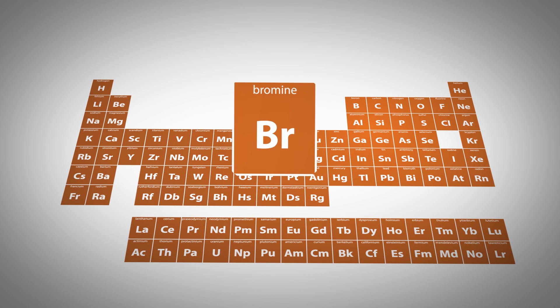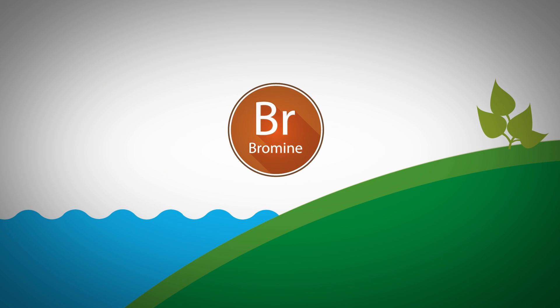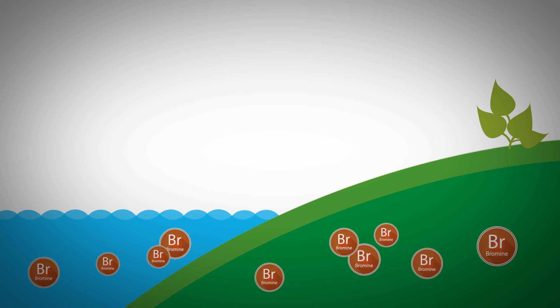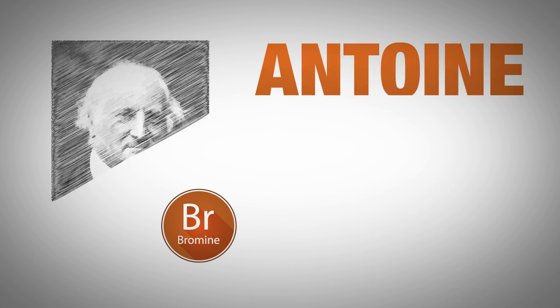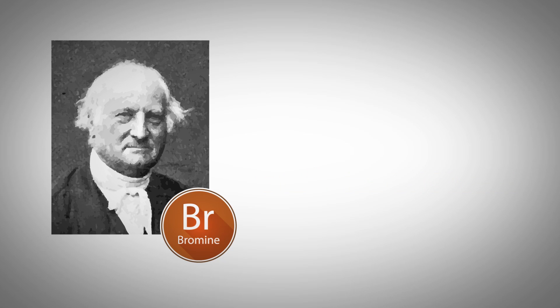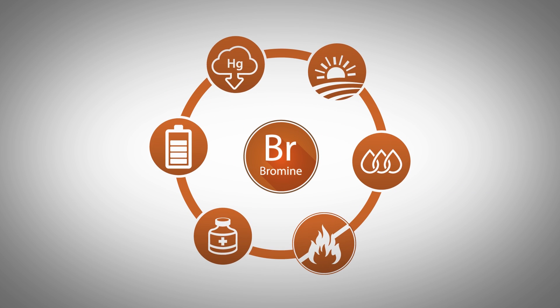Bromine is a deep orange-red liquid chemical element found in the form of compounds, mainly in soil and seawater. Since its discovery in the 19th century, it has been used in important fields allowing for significant innovation.